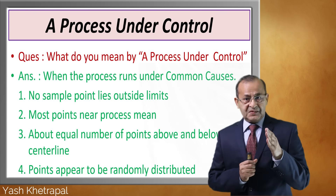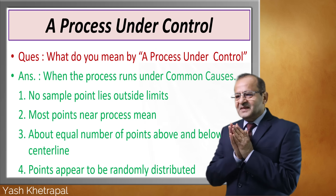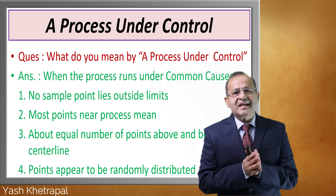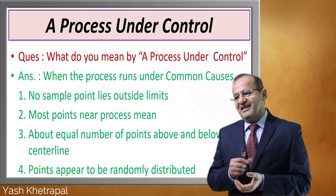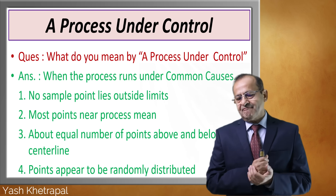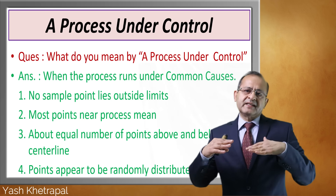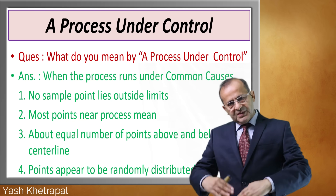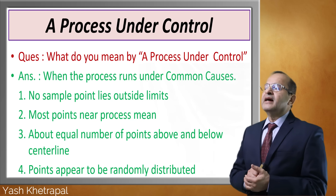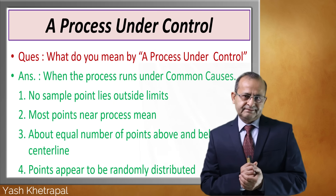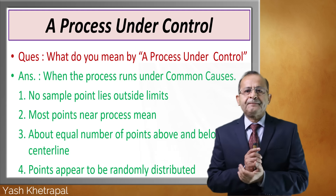How do you say when the process is under control? When the process operates under common causes only, then we say it is under control. Indicators: when we plot the control chart, no sample point or subgroup point lies outside the limit. Second, most points are near the process mean. Third, about equal number of points above and below the mean line. Points should be randomly distributed — there should not be a pattern. An increasing or decreasing pattern will indicate a shift in the process.